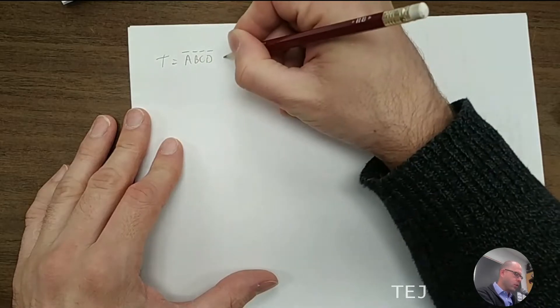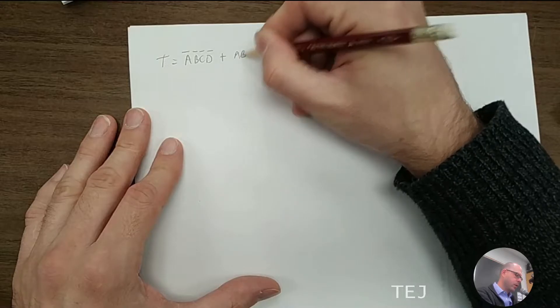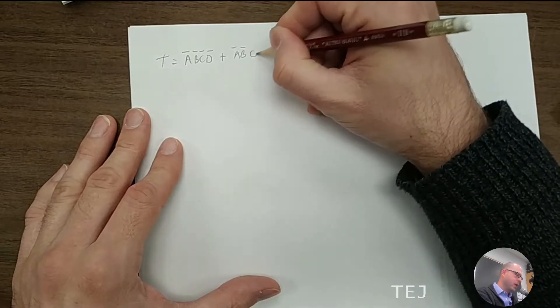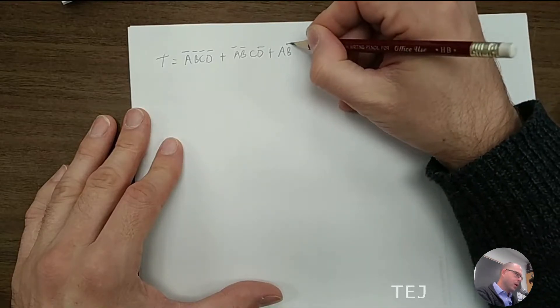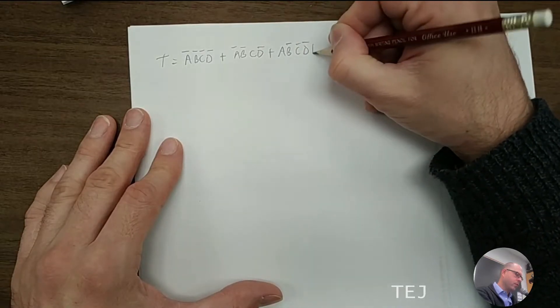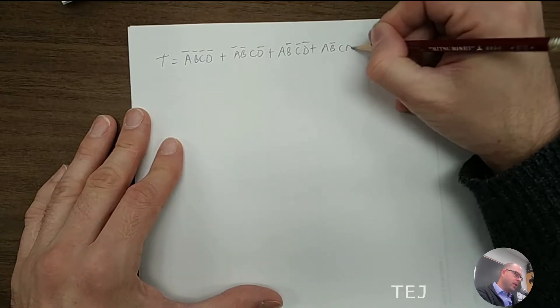So I'm going to give you four terms here. So there's the first one, and then we have a naught, b naught, c, d naught, and then we have a, b naught, c naught, d naught, finally a, b naught, c, d naught.